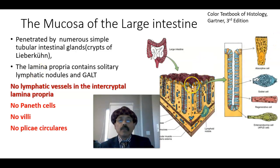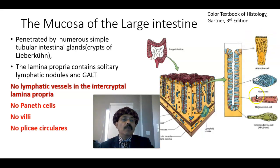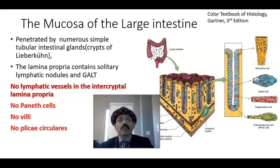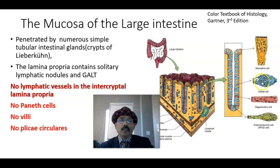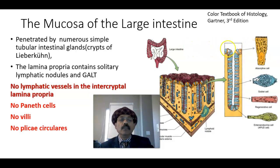In the Crypts of Lieberkühn we will get the absorptive cell, also called colonocytes — these are columnar cells with microvilli. We have the goblet cell that secretes mucus, which is very essential to lubricate the feces. We have around 9 liters of fluid in the intestine, and most of the fluid is absorbed — only 100 ml of fluid passes along with the feces. So we need lubrication, and that is done by the goblet cell. Here is the nucleus; these are the mucus granules that will come out and lubricate the lumen of the large intestine.